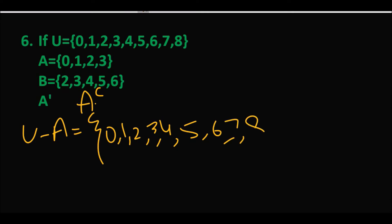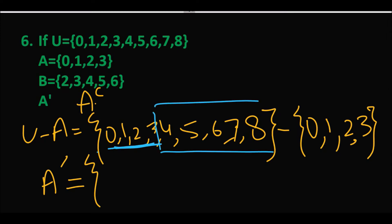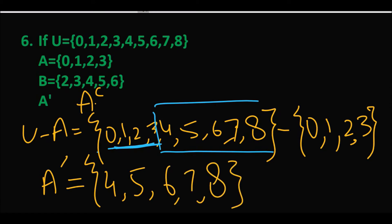A का complement लेने के लिए universal set में से A set को extract करते हैं — बाकी जो remaining elements होंगे वो A का complement होंगे। Universal set में से A के elements {1, 2, 3} निकालने के बाद remaining elements हैं {0, 4, 5, 6, 7, 8} — तो A complement = {0, 4, 5, 6, 7, 8}.